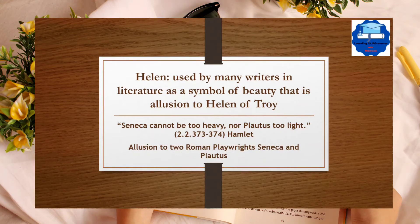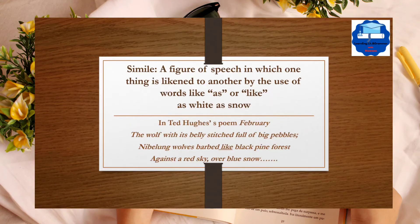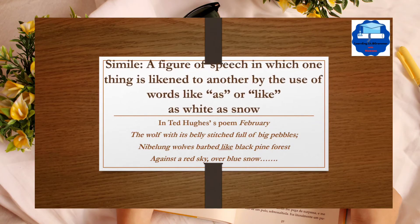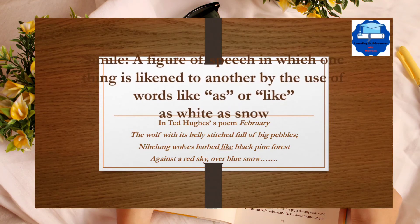Simile is a figure of speech in which one thing is likened to another by the use of words 'as' or 'like.' Common examples are: as white as snow, as brave as a lion. In literature, here is an example.